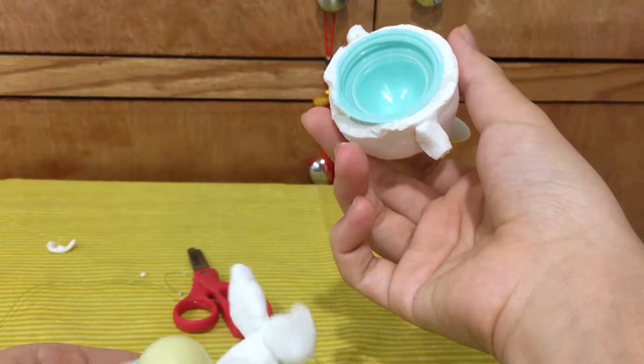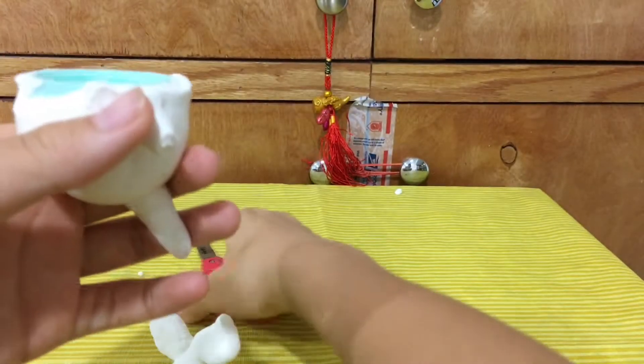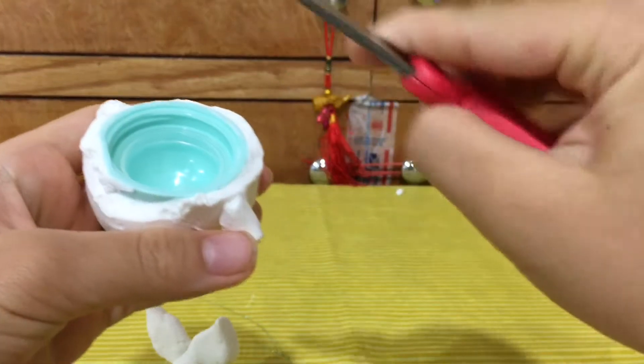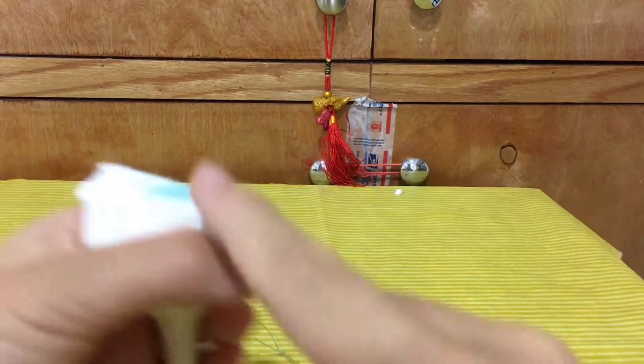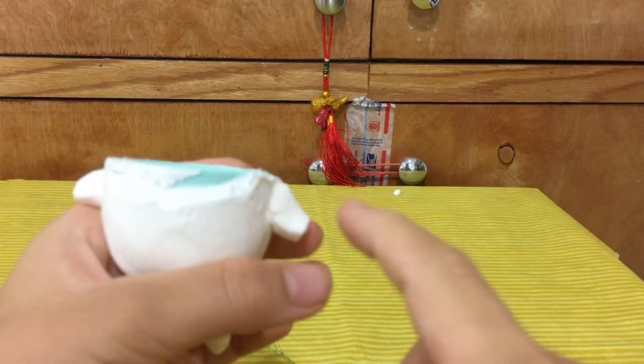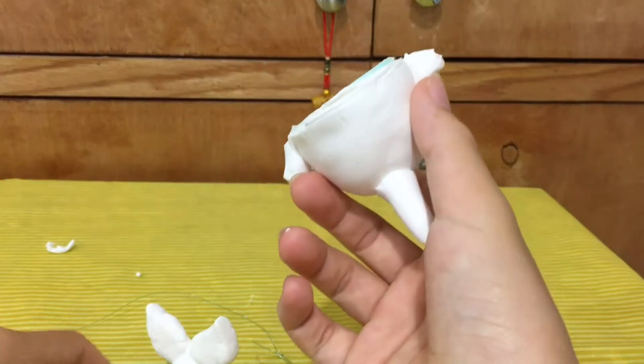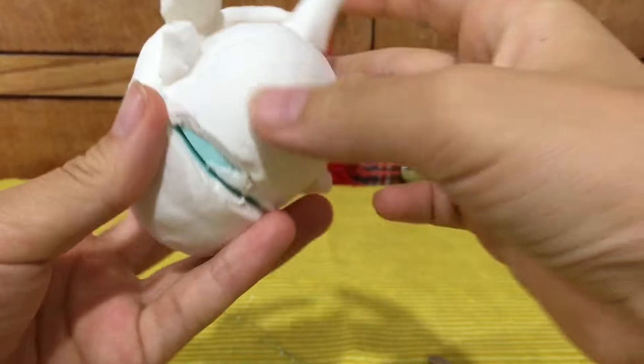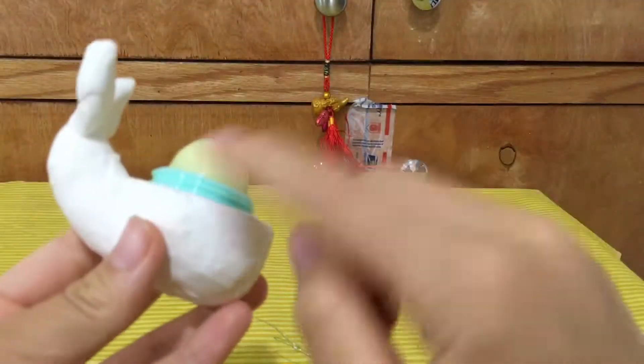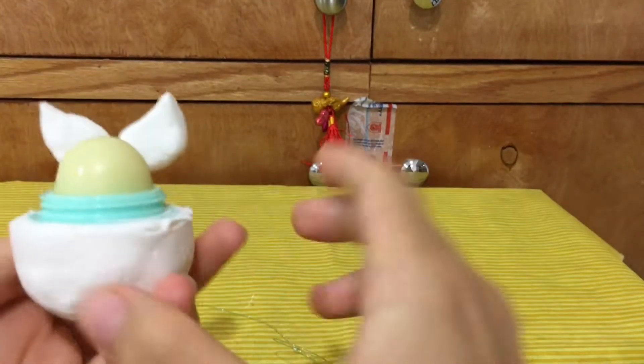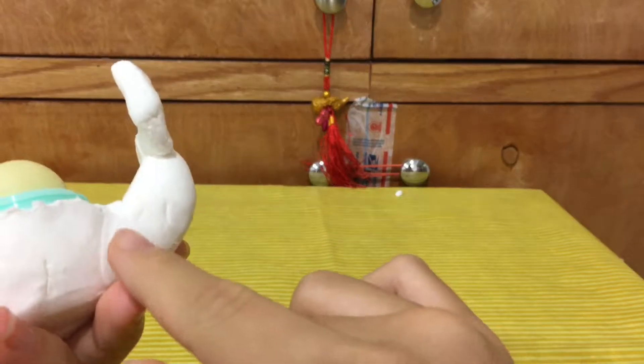I smoothed it out more with water, and now we're going to push it down a bit and make the bottom flat so it can stand up. Now take more clay, and we're going to make the tail portion of the narwhal.